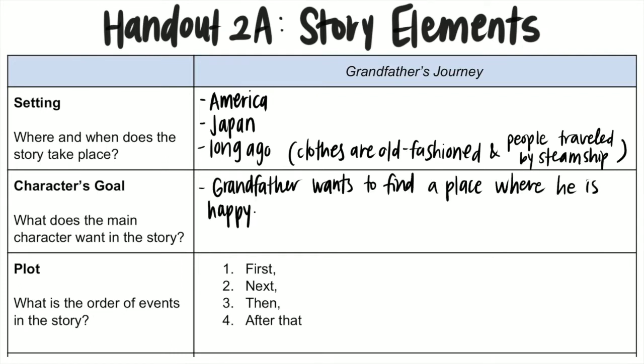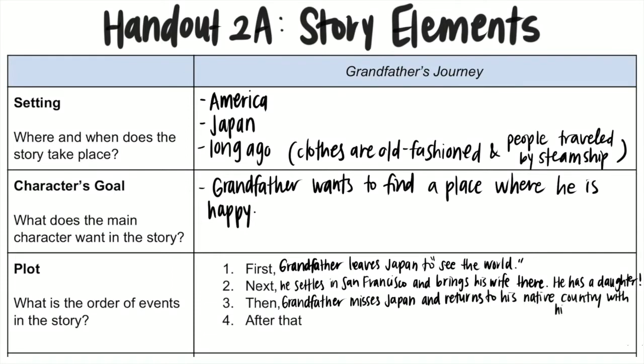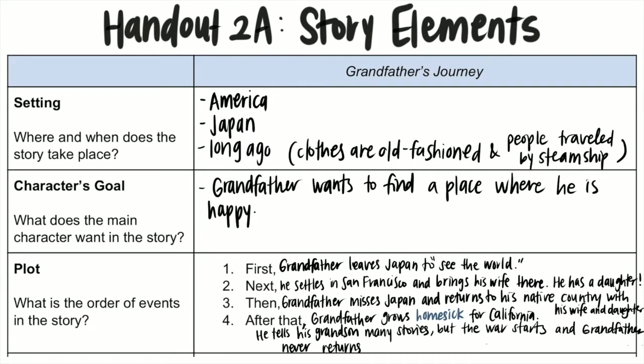For the character's goal, what does the main character want in the story? Grandfather wants to find a place where he is happy. For the order of events — the plot — first, grandfather leaves Japan to see the world. Next, he travels and settles in San Francisco and brings his wife there, where he has a daughter. Then, grandfather misses Japan and returns to his native country with his wife and daughter. After that, grandfather grows homesick for California and tells his grandson many stories, but the war starts and grandfather is never able to return.